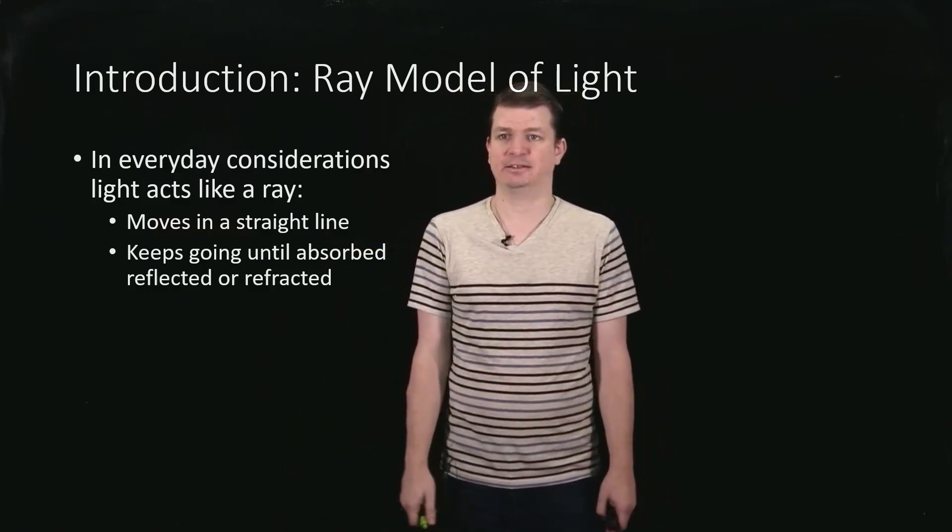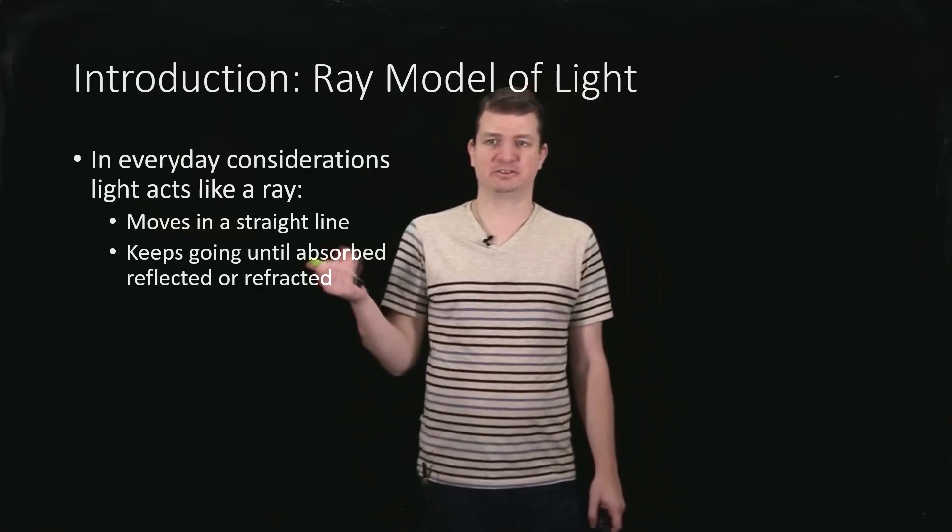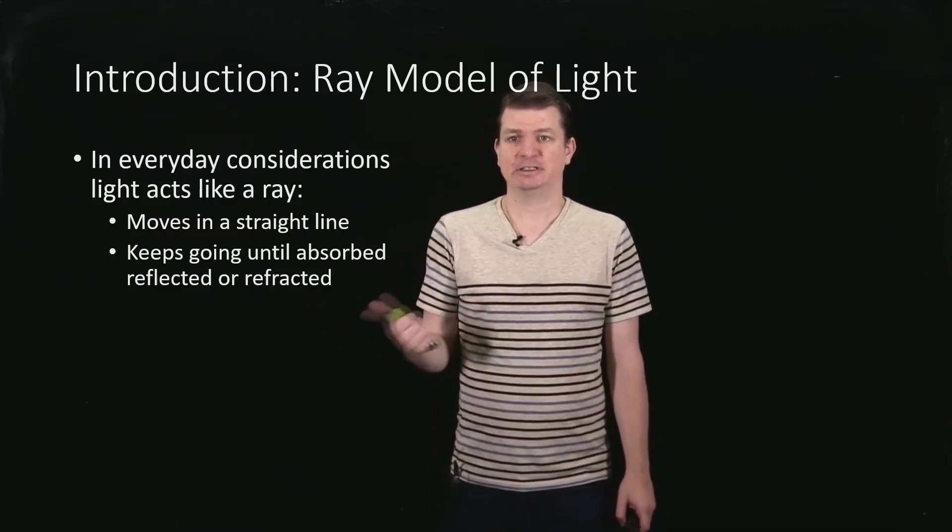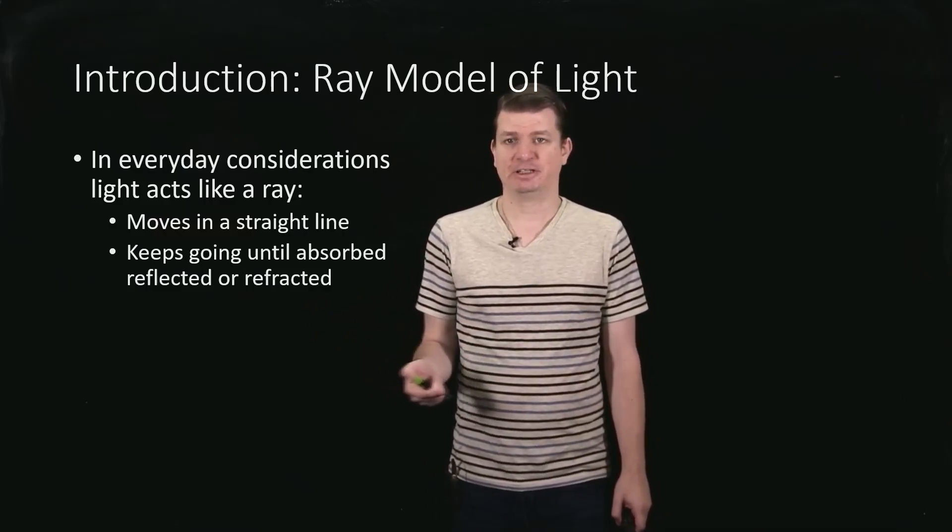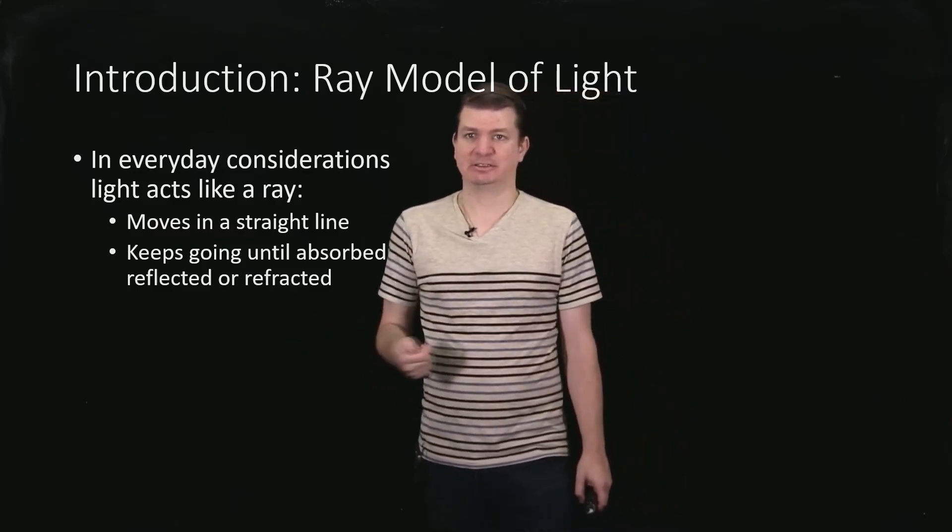And that is the fundamental idea of the ray model, that light will just move in a straight line and it will keep going in that same straight line until it's either absorbed, reflected, or refracted by basically interacting with something.